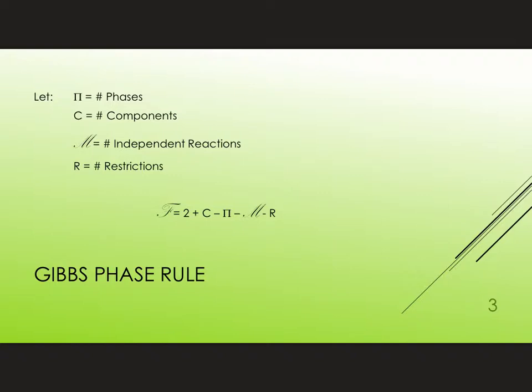Then Gibbs phase rule says that the degrees of freedom, the number of independent variables you can specify, is 2 plus c minus pi the number of phases, minus m the number of independent reactions, minus r the number of restrictions.